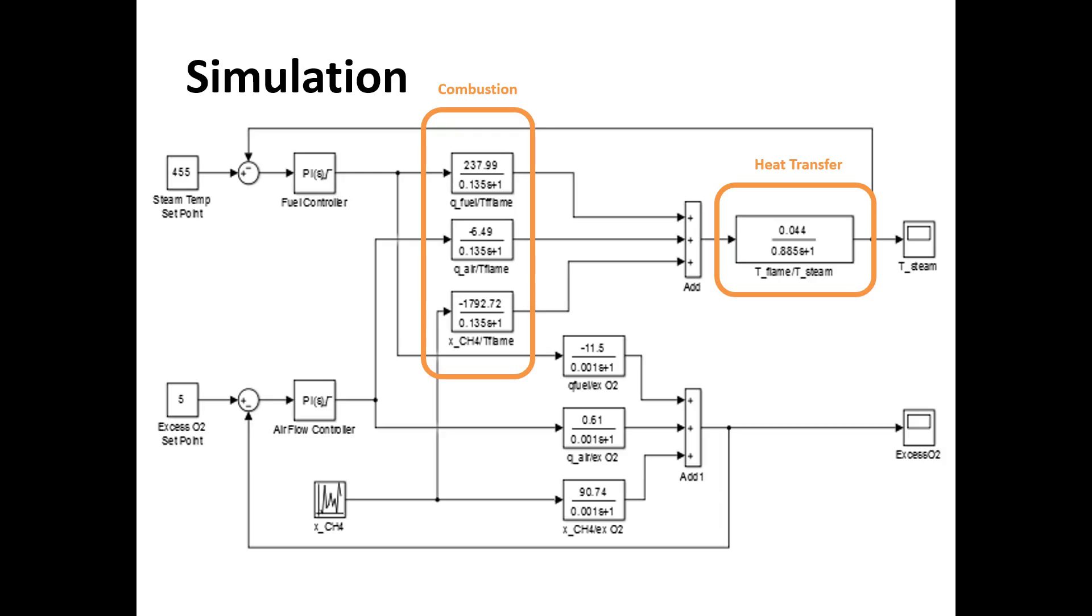This is the top loop which calculates the steam temperature. There was also a parallel control loop which used the excess oxygen models. Then we have the two set points you notice on the left hand side, steam temperature and excess O2.